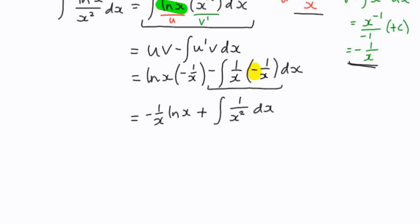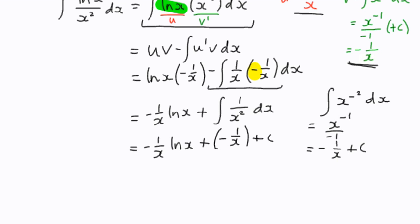And now, again, if you want to do it at the side just to be sure, we've got 1 over x squared is x to the power negative 2. We've already done that up above, which gives us x to the power negative 1 divided by negative 1, which is negative 1 over x plus c. So here we've got negative 1 over x times the log of x plus negative 1 over x plus c.